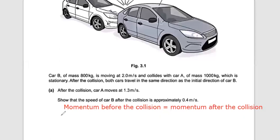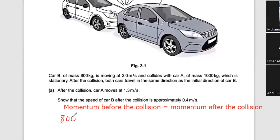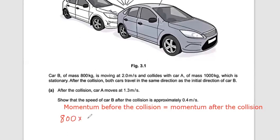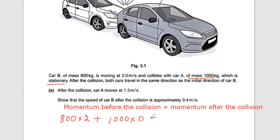Car B has a mass of 800 kilograms and is moving with a velocity of 2 meters per second. To find momentum, we use mass times velocity. Car A is at rest — its mass is 1000 kilograms and its velocity is zero, so its initial momentum is zero.